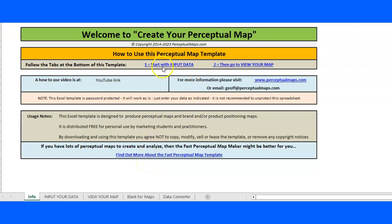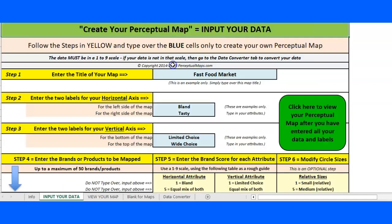To start with the input data, you can click here or click on the tab down there, and you will immediately go through to the input your data section. There's some data there already, but all you need to do is follow the steps in yellow and type over the blue cells.